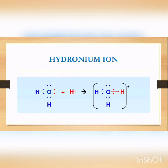Let us first see the hydronium ion. This structure and entity is very important, even for the next chapter. Hydronium ion is formed when a hydrogen ion attaches to a water molecule. The water molecule has two lone pairs of electrons, and the lone pair shown in red dots will attach with hydrogen. The hydrogen ion comes without any electrons, and oxygen is ready to share both the electrons with hydrogen. Both of them are sharing, so this is a coordinate bond.